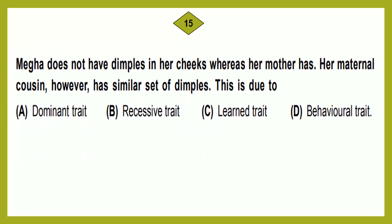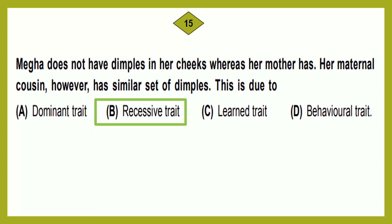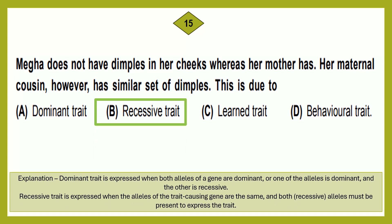Question number 15: Maga does not have dimples in her cheeks, whereas her mother has. Her maternal cousin, however, has a similar set of dimples. This is due to: option A: dominant trait; option B: recessive trait; option C: learned trait; option D: behavioral trait. The correct answer is option B, recessive trait. A dominant trait is expressed when both alleles are dominant, or one allele is dominant and the other recessive. A recessive trait is expressed only when both alleles of the gene are recessive.